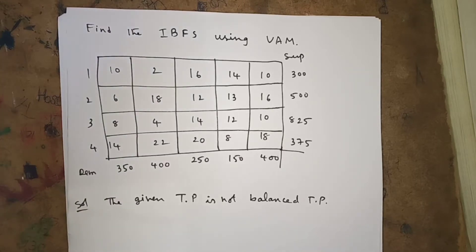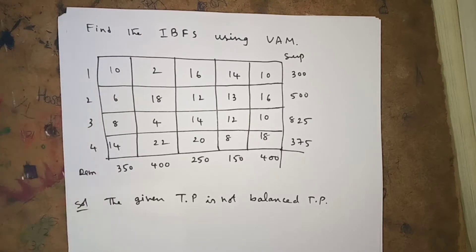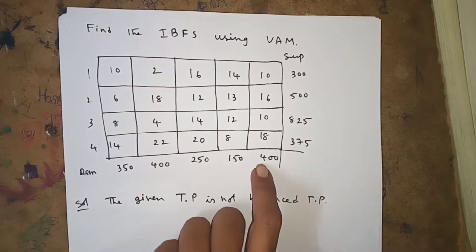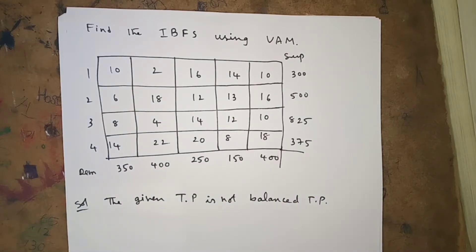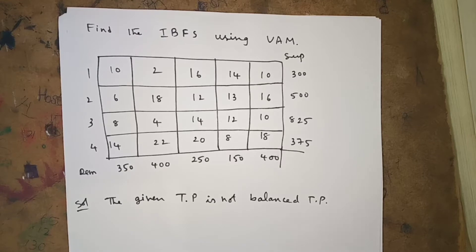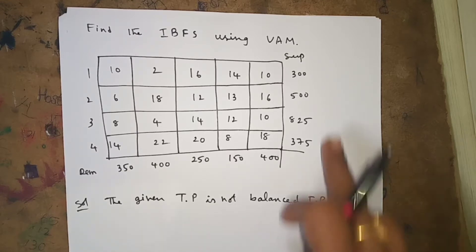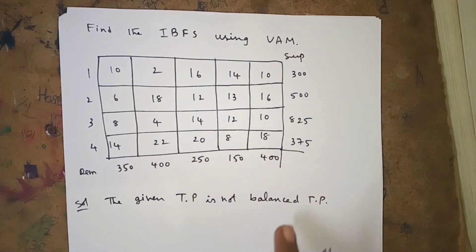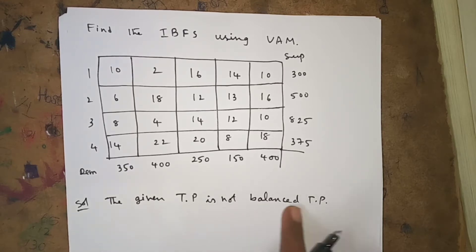Hello everyone, today I am going to explain one more problem using Vogel's Approximation Method (VAM). If you observe the given problem carefully, if you add all the demands you will get 350 plus 400 plus 250 plus 150 plus 400, which equals 1550. If you add all supply values — 300 plus 500 plus 825 plus 375 — you will get 2000. Since sum of supplies is not equal to sum of demands, the given transportation problem is unbalanced.